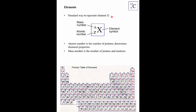The standard way to represent an element — I'll call it X — uses a symbol, an atomic number Z in the bottom left, and a mass number A at the top. For carbon with Z=6 and A=12: the atomic number tells you the number of protons, which determines the element's chemical properties. The mass number tells you the total number of protons plus neutrons — the nucleons in the nucleus.